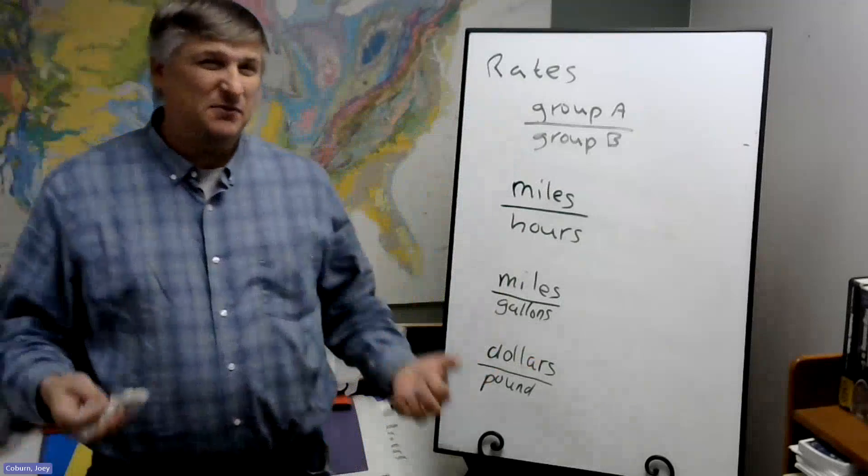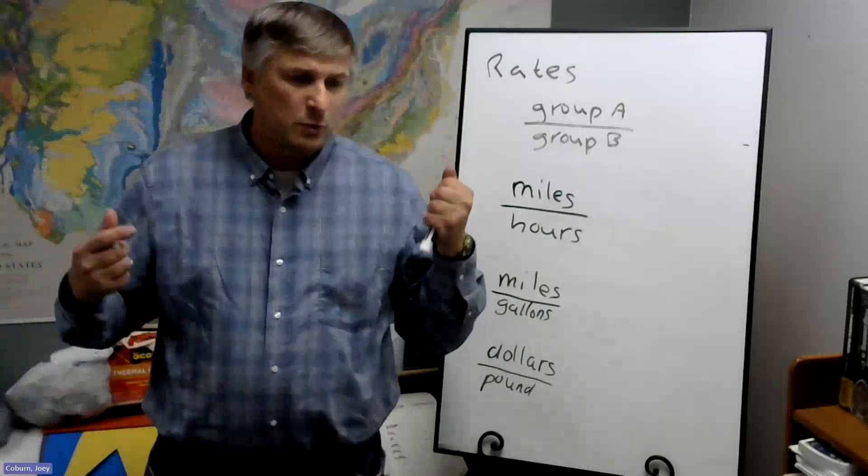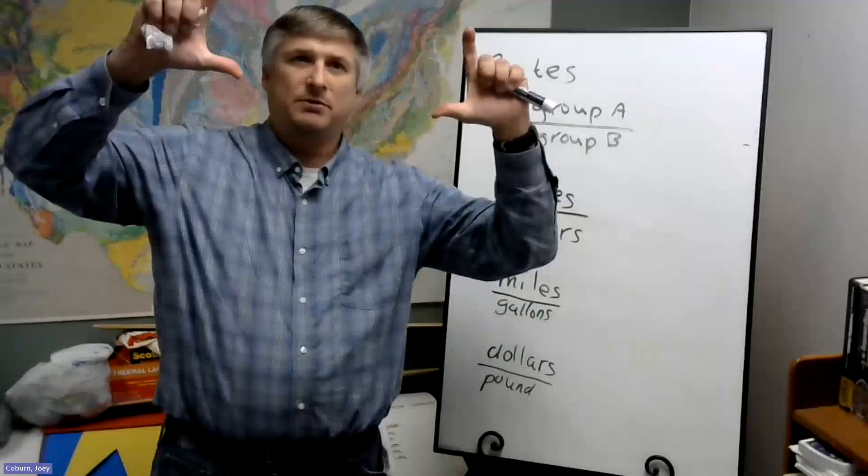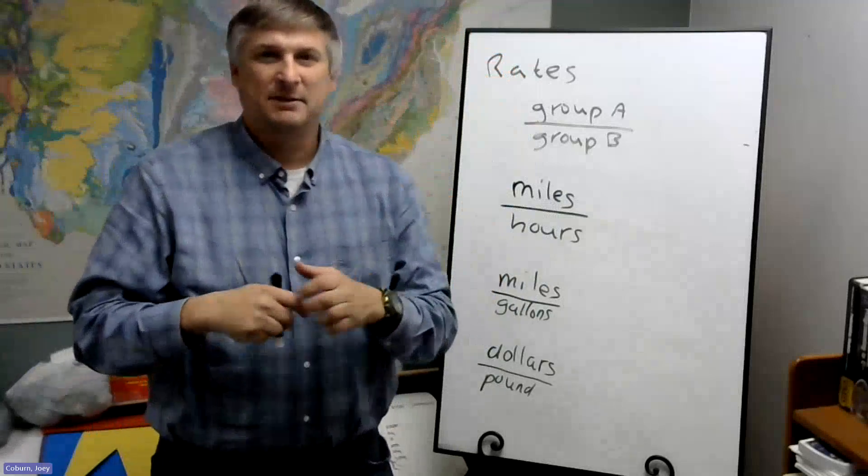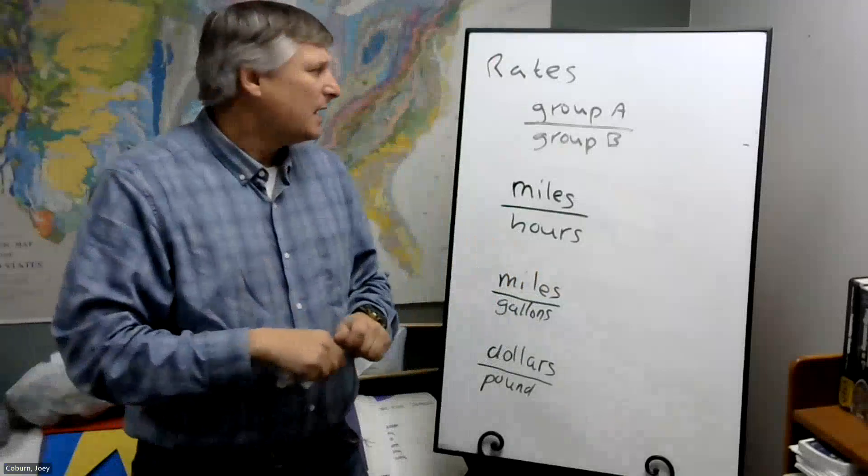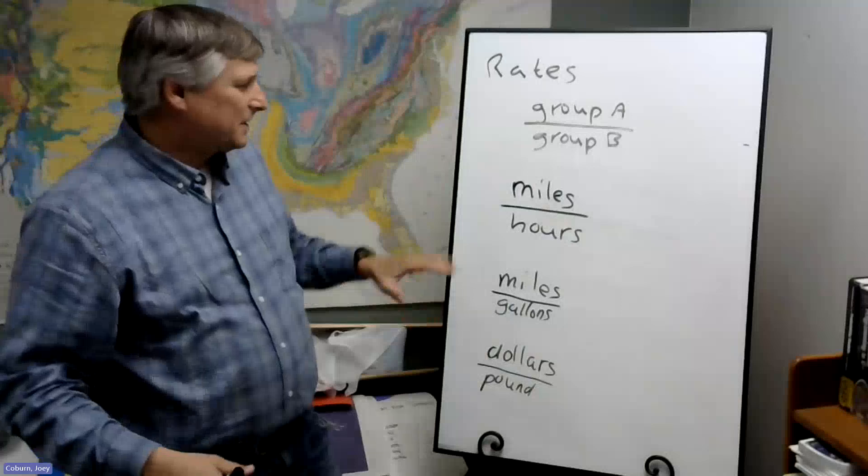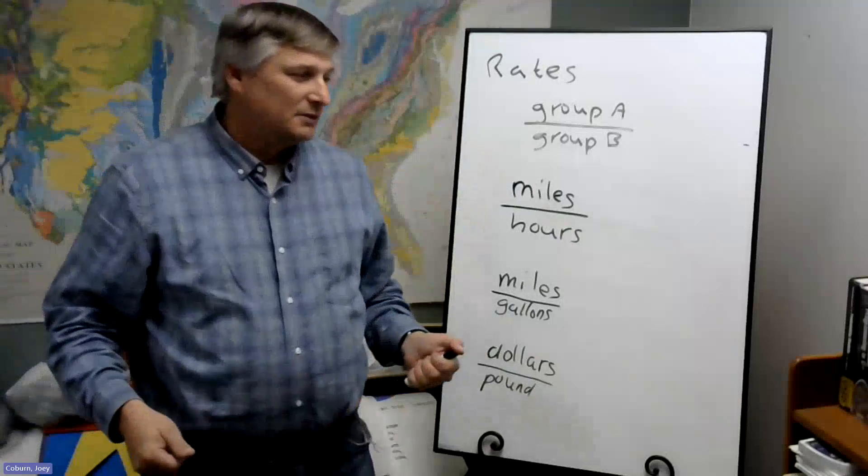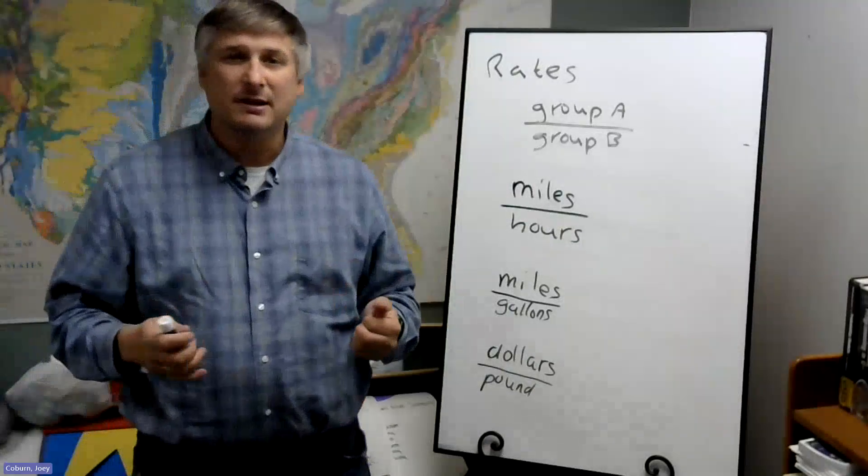So that's really the difference between these. Fractions are part over whole. Ratios is within a group, we divide it into subgroups and compare the subgroups. Basketball games where you won, basketball games where you lost. And then with rates we compare completely different things, like say distance and time. So that's the introduction to these, and we'll start doing some examples.